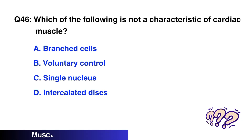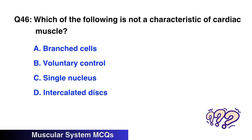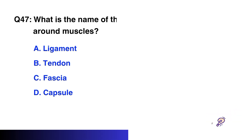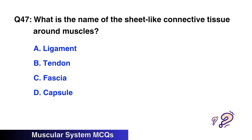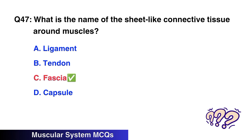Question No. 46: Which of the following is not a characteristic of cardiac muscles? The right option is B: Voluntary control. Question No. 47: What is the name of the sheet-like connective tissue around muscles? The right option is C: Fascia.